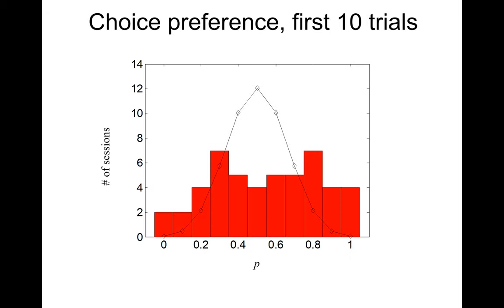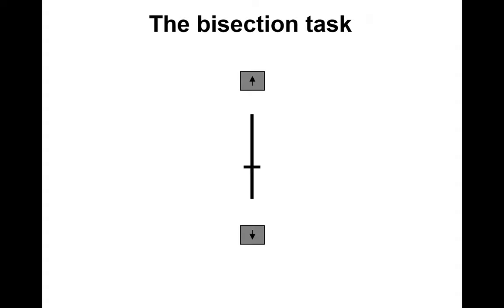Studying choice bias in this task is rather problematic for various reasons. One is that within 10 trials you already see some learning, and we wanted to dissociate the learning from this choice bias. So we came up with a different task: the bisection task.